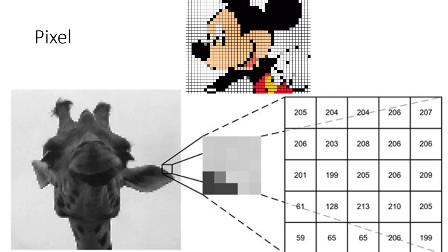Each pixel holds a value between 0 to 255 in case of a grayscale image, like the giraffe seen in the picture. Whereas in case of color images such as Mickey, each pixel will hold three values for red, green, and blue color intensities.